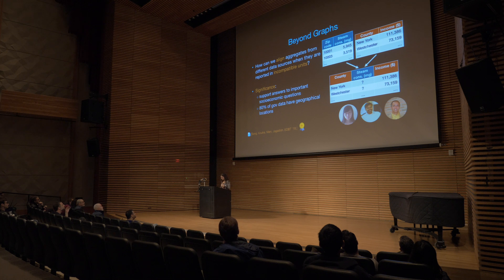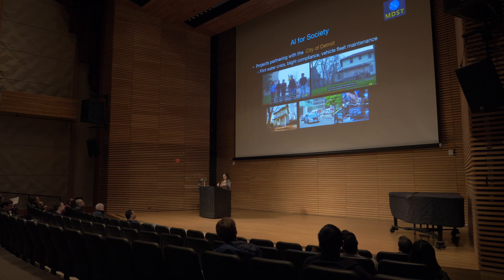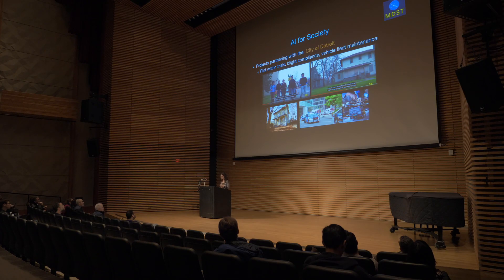This work is in collaboration with colleagues in the database group, where we wanted to align tables with incompatible units — for example, geographic location in one table based on zip codes and another based on county. How can we merge those to answer important socioeconomic questions when the units in which data sets were collected are incompatible? I also want to mention our work with the Michigan Data Science Team, a student-led organization where myself, Professor Wiens, and Professor Swartz are advisors, working on projects partnering with the city of Detroit on vehicle fleet maintenance patterns and cost reduction, and there was also a very successful project on the Flint water crisis.